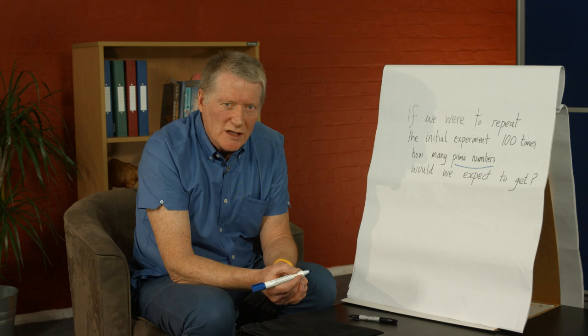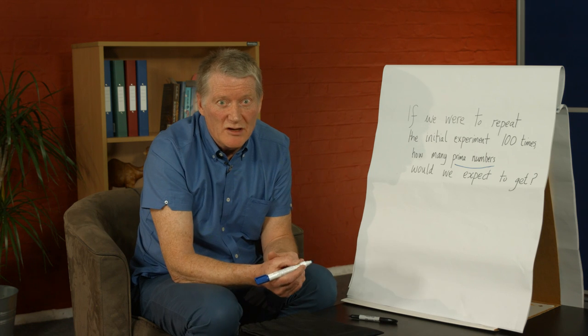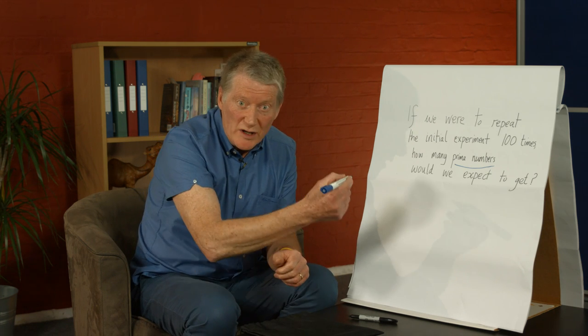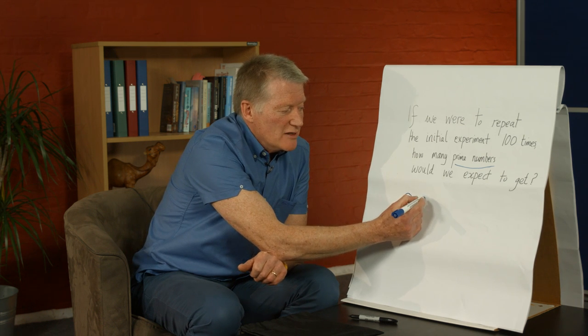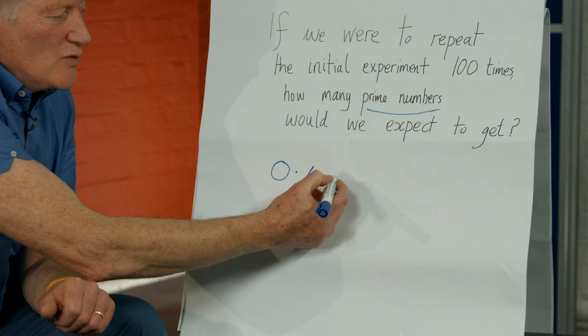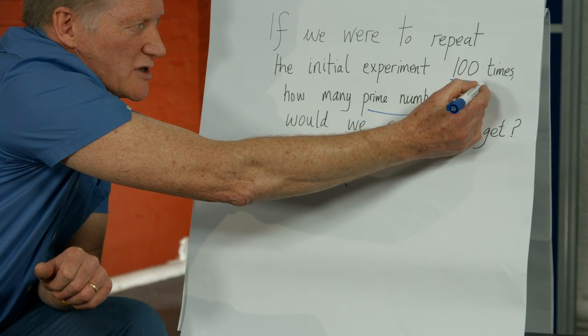Well, this is found by doing the probability of getting a prime number, which is what we've just done on the last question. So that was 0.4 or 4 tenths. And we multiply it by the number of trials that are being done.